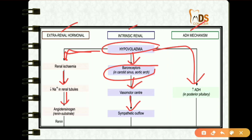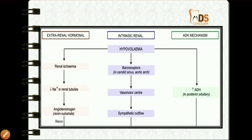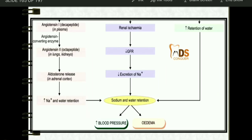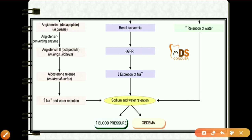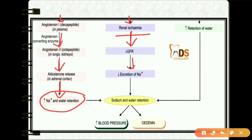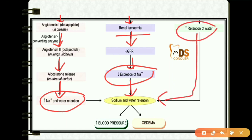Hypovolemia also increases ADH production in the posterior pituitary gland. Angiotensin I is converted to angiotensin II, and finally there is aldosterone release, causing increased sodium and water retention. Sympathetic outflow causes renal ischemia, decreased glomerular filtration rate, decreased excretion of sodium, and ultimately sodium and water retention. ADH causes increased retention of water. This sodium and water retention leads to increased blood pressure and edema.